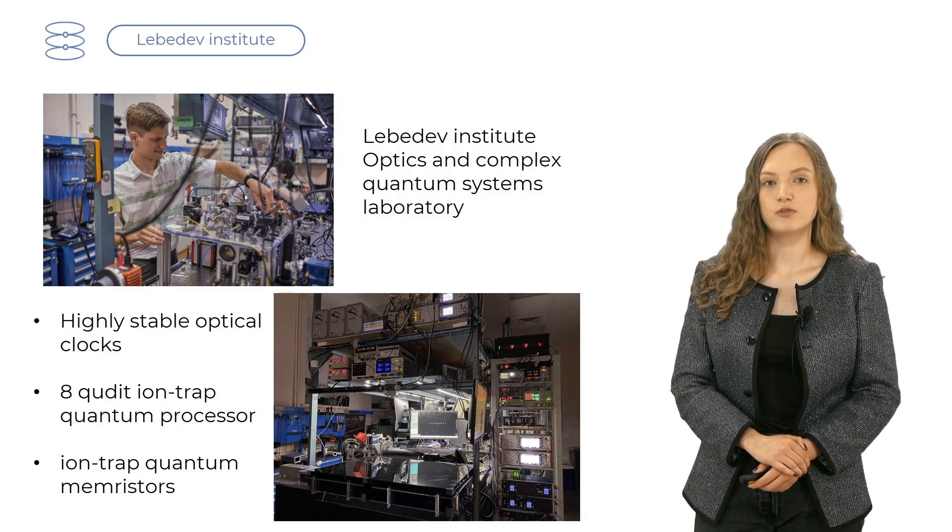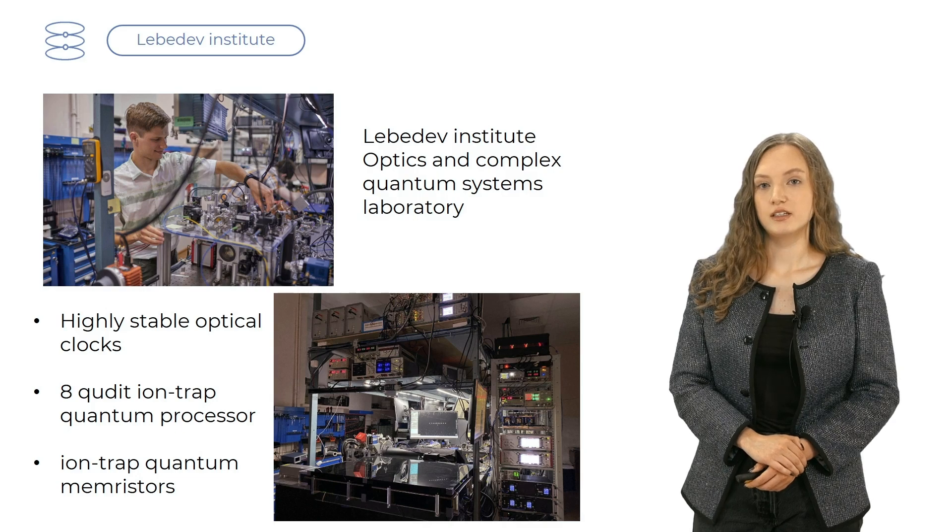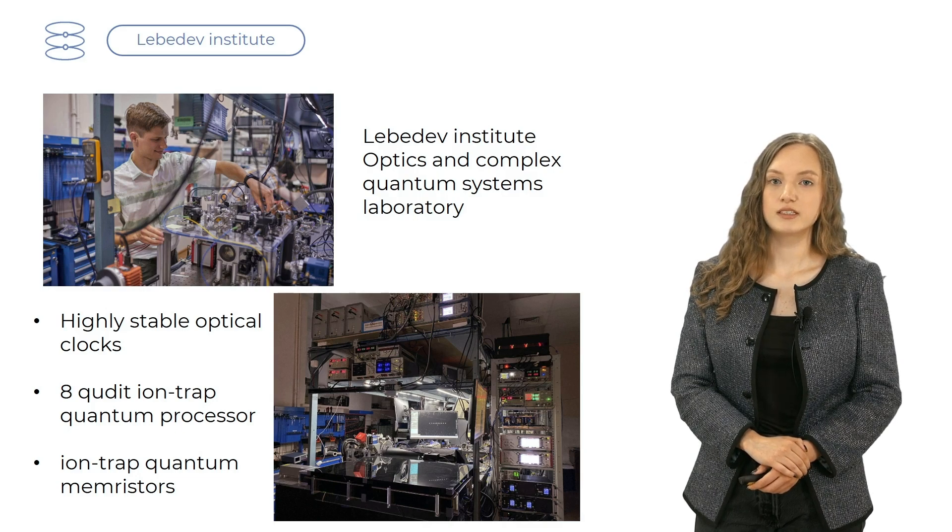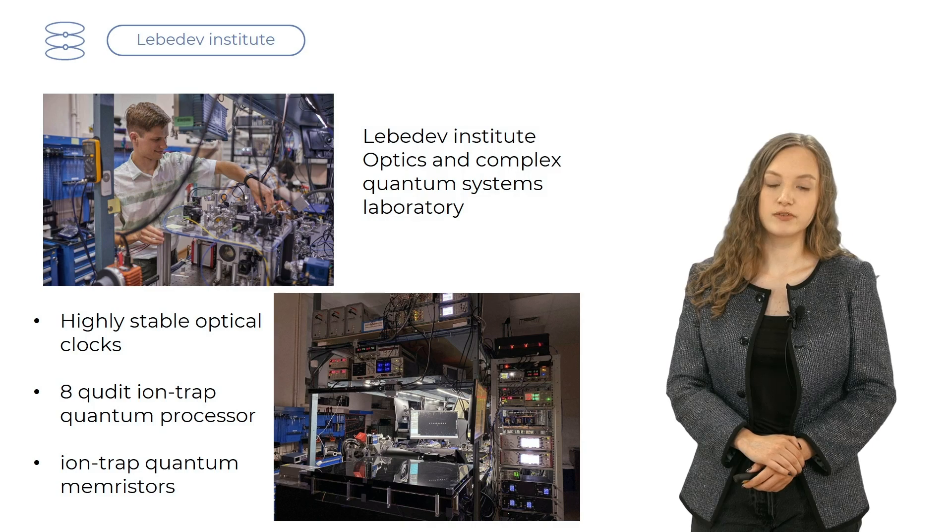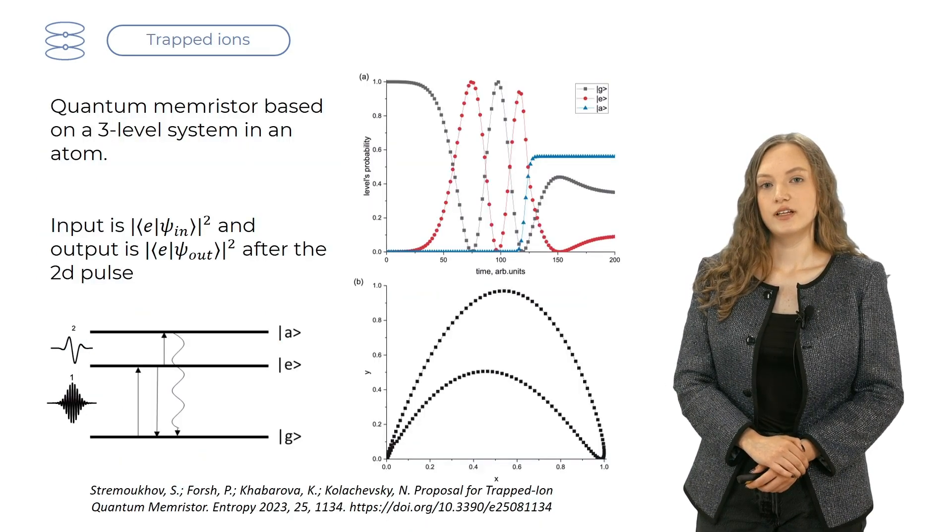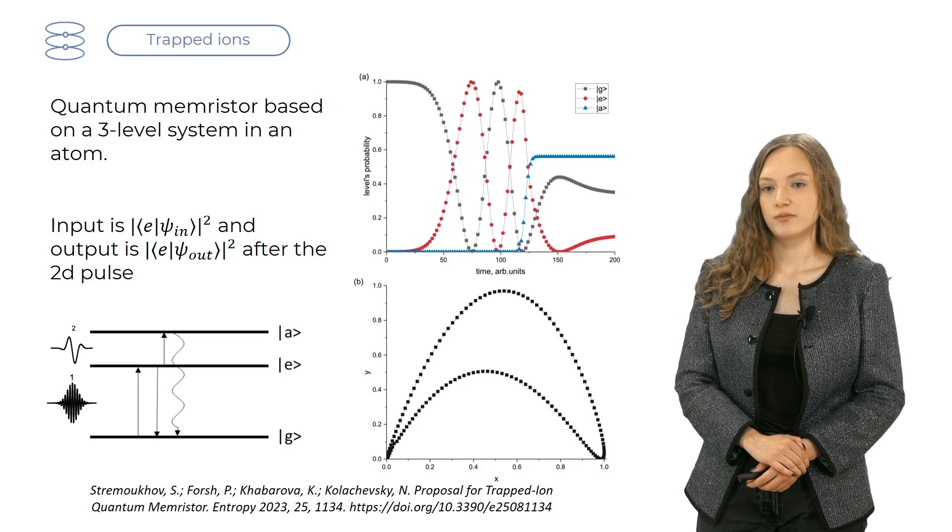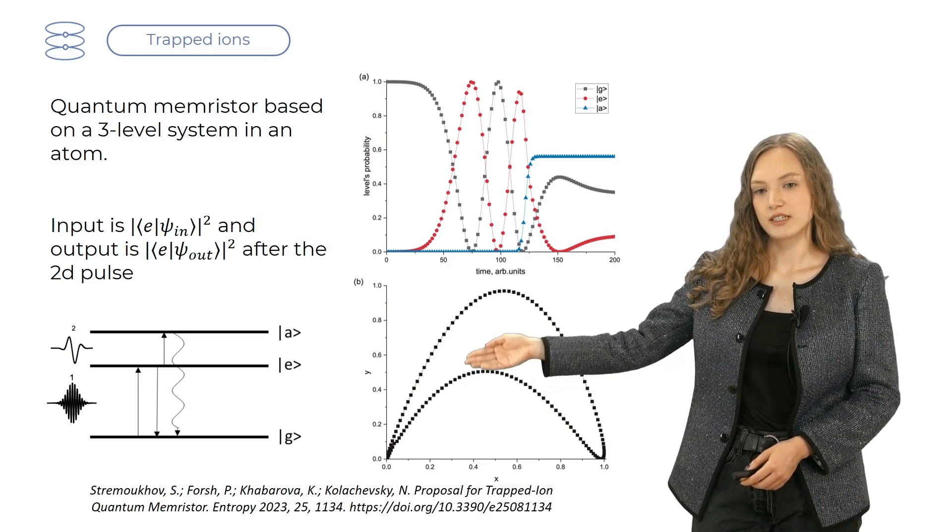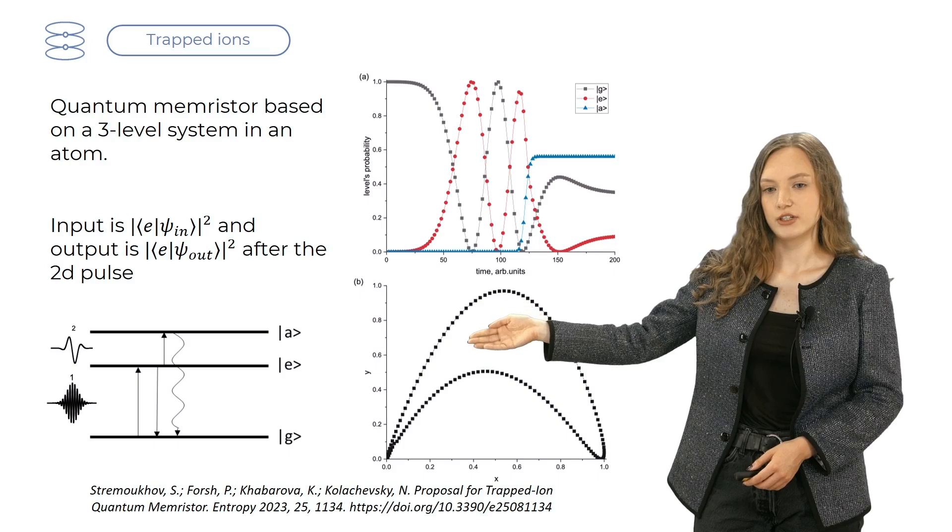We use the platform of trapped ions. And in terms of theoretical principles, it is similar to the photonic quantum memristor we've discussed. For an ionic memristor, three levels in an atom are chosen. A ground level, an excited level, and an activation level.